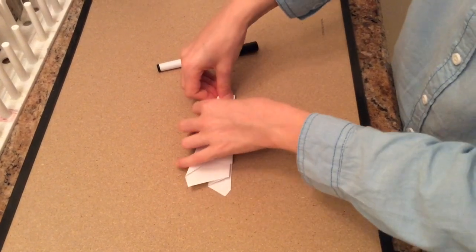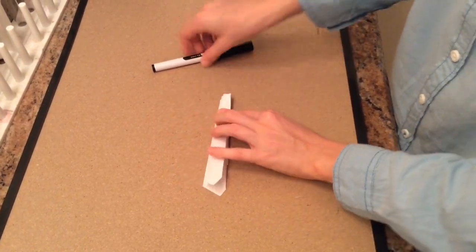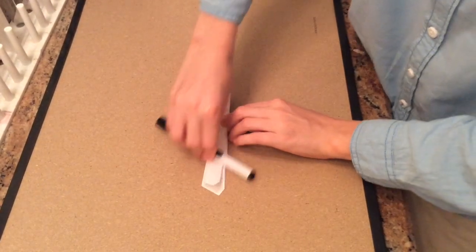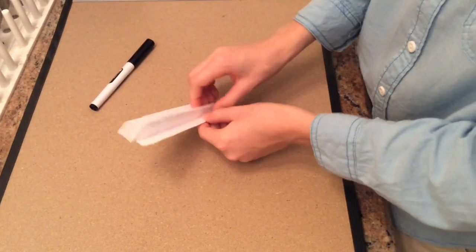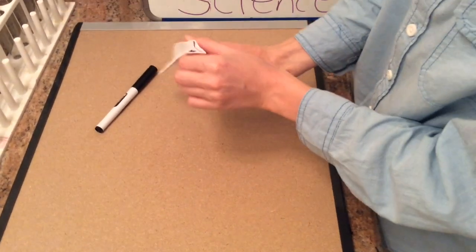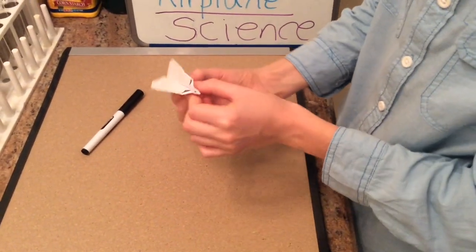And then flip it over and repeat with the other side. And again, crease. Now pop out the wings and give them a slight up angle like that.